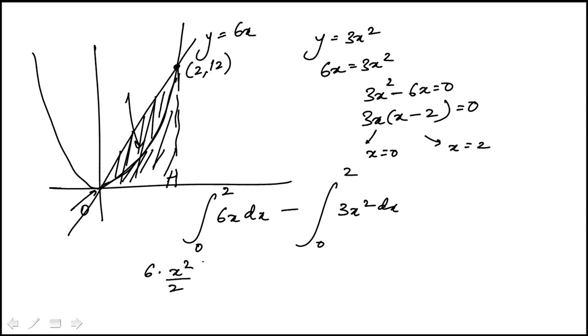So this would be 6x squared over 2, evaluated from 0 to 2. And then this is x cubed over 3, evaluated from 0 to 2. Zero is going to give me 0 in both cases.